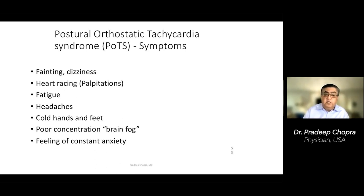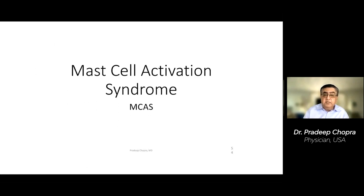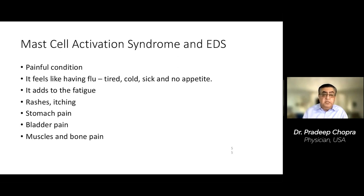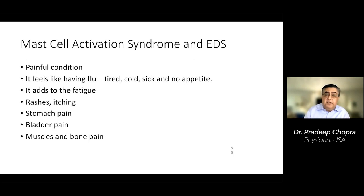Mast cell activation syndrome is a serious condition. The best way to explain it is that it feels like you have the flu all the time — you're tired, alternately cold and hot, sweaty, with no appetite. It causes pain everywhere, including in joints that are already painful. It causes rashes, itching, stomach pain, bladder pain, and bone pain.